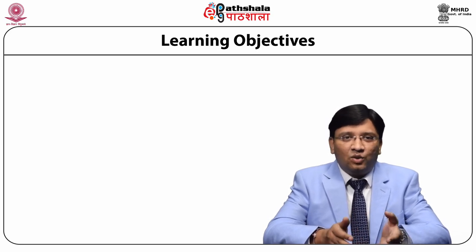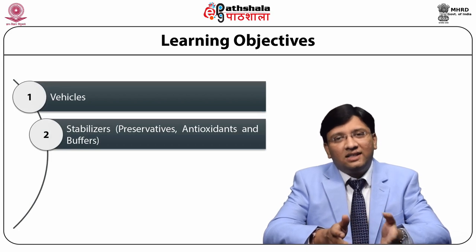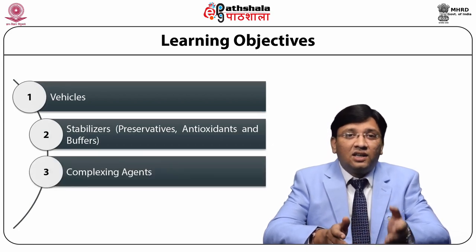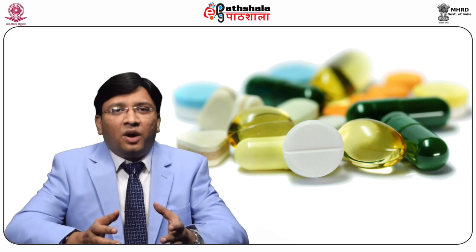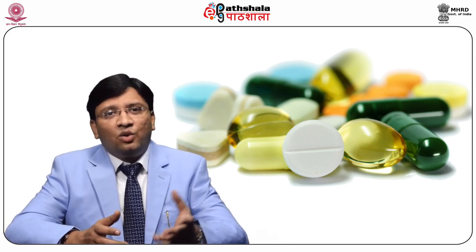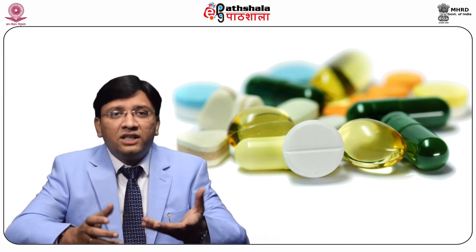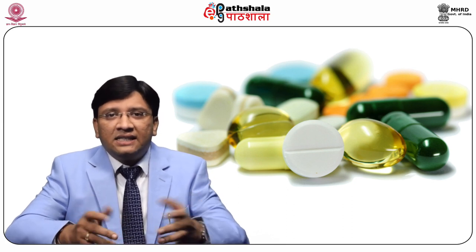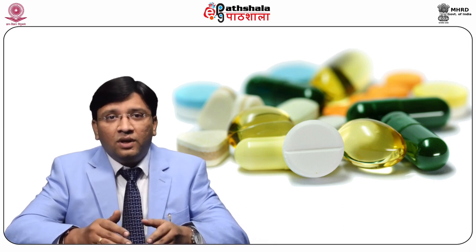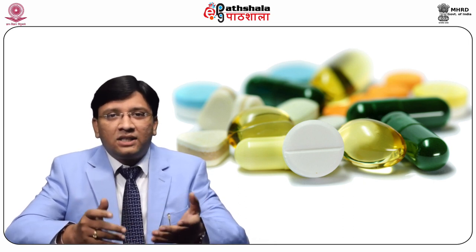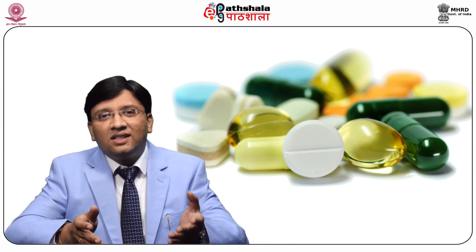Various raw materials include vehicles, stabilizers such as preservatives, antioxidants and buffers, complexing agents, and organoleptic agents that include sweeteners, flavors and colors. Formulation considerations generally include raw material selection. Raw material specifications are more important in liquid products as contaminants can adversely affect the formulation more than in solid dosage forms. Also, many features of liquid products are controlled by including several raw materials such as sweeteners, thickening agents, and so forth.